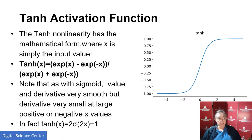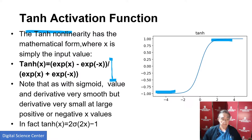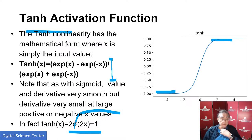Tanh is actually a very similar shape except it goes from minus one to one. You can show this elementary relationship: if sigma is the sigmoid function, tanh of x equals twice the sigmoid of two x minus one. You can just plug in the previous formula to show that.